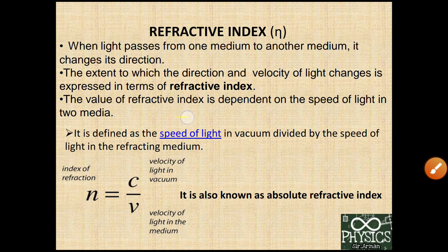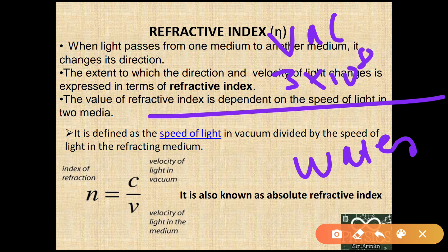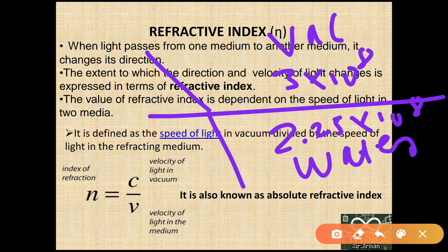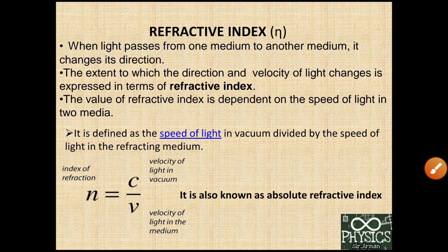For example, suppose the second medium is water. In vacuum the speed of light is 3×10⁸ m/s, and in water the speed is 2.25×10⁸ m/s. The speed decreases when light enters from vacuum to water. Taking the ratio gives us 1.33. So if I say the refractive index of water is 1.33, it means the speed of light in water decreases by 1.33 times compared to its speed in vacuum.